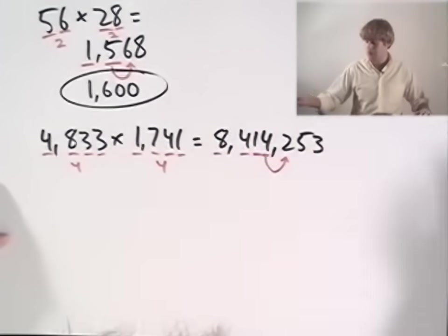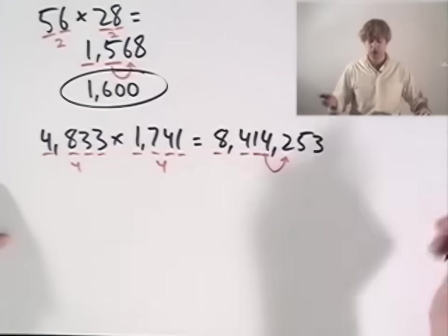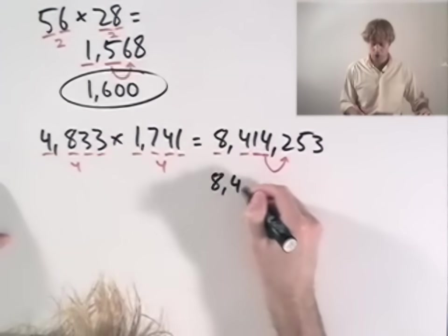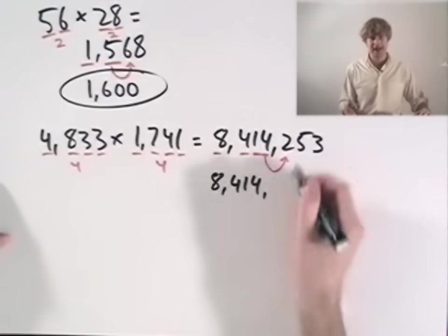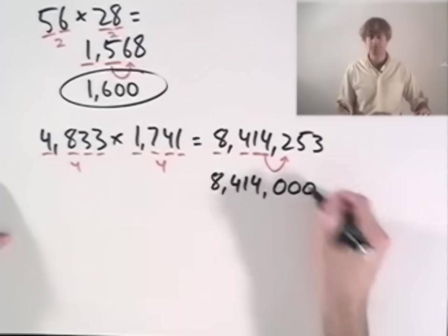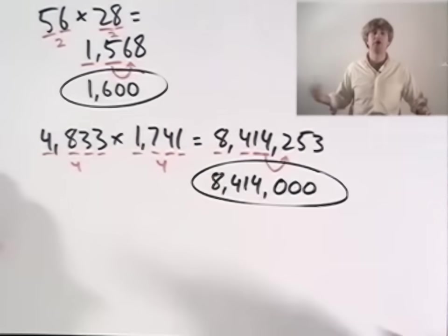I look here to figure out whether I round up or down. It's a 2 so it stays the same, 8, 4, 1, and 4 and I fill the rest of the number in with zeros. I don't need them. Round it to four digits.